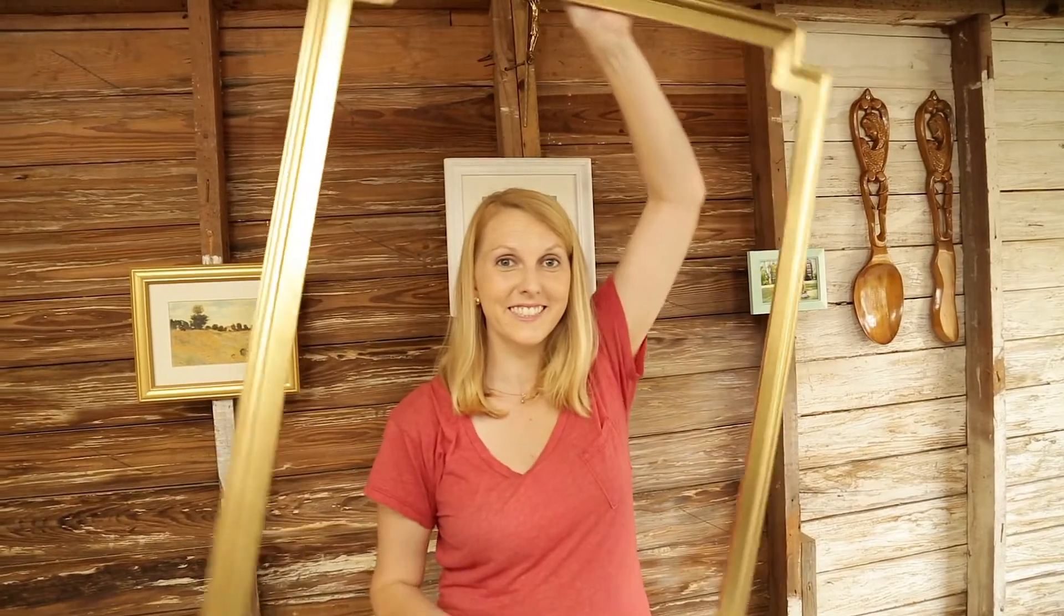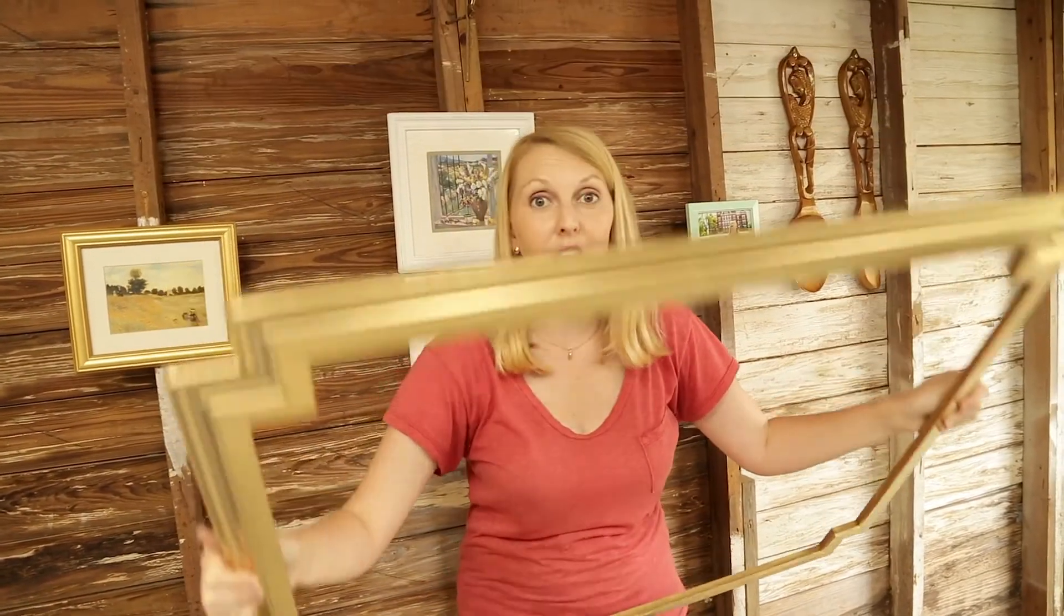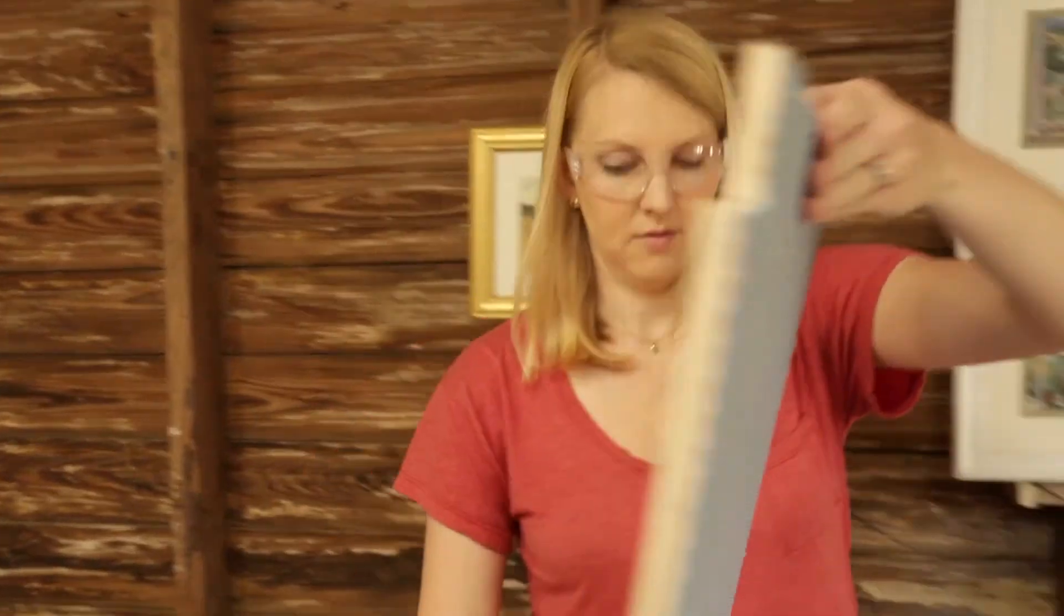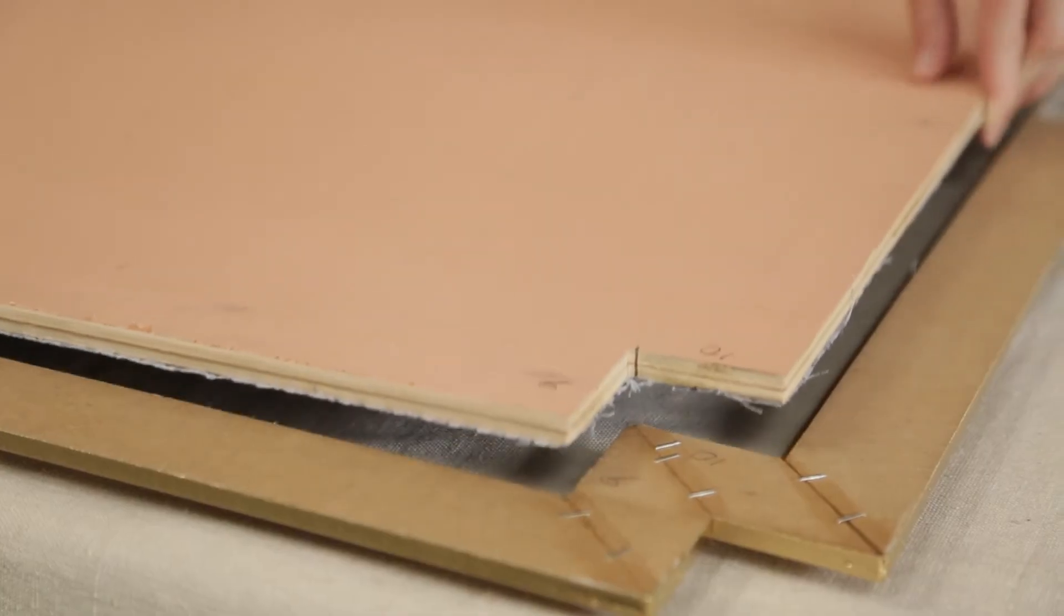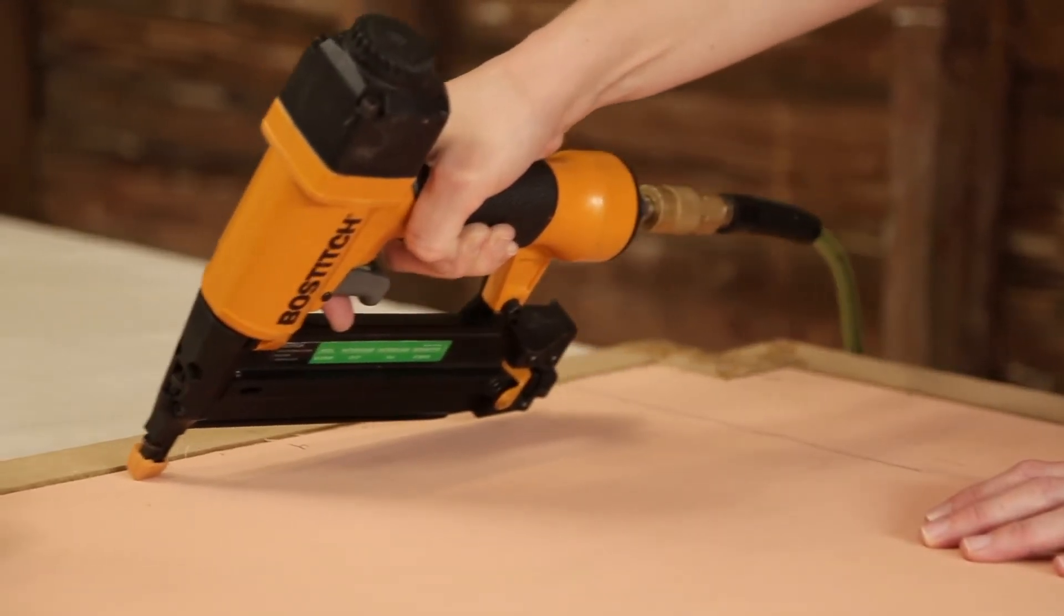Now the paint is dry. I'm ready to put this all together. I'm really excited about how the gold turned out on this frame. To attach it to the plywood, I'm going to turn everything face down and attach it through the back. That way, I don't have any nail holes to putty. Using 5/8 inch brad nails, I'm nailing every few inches into the frame at an angle.